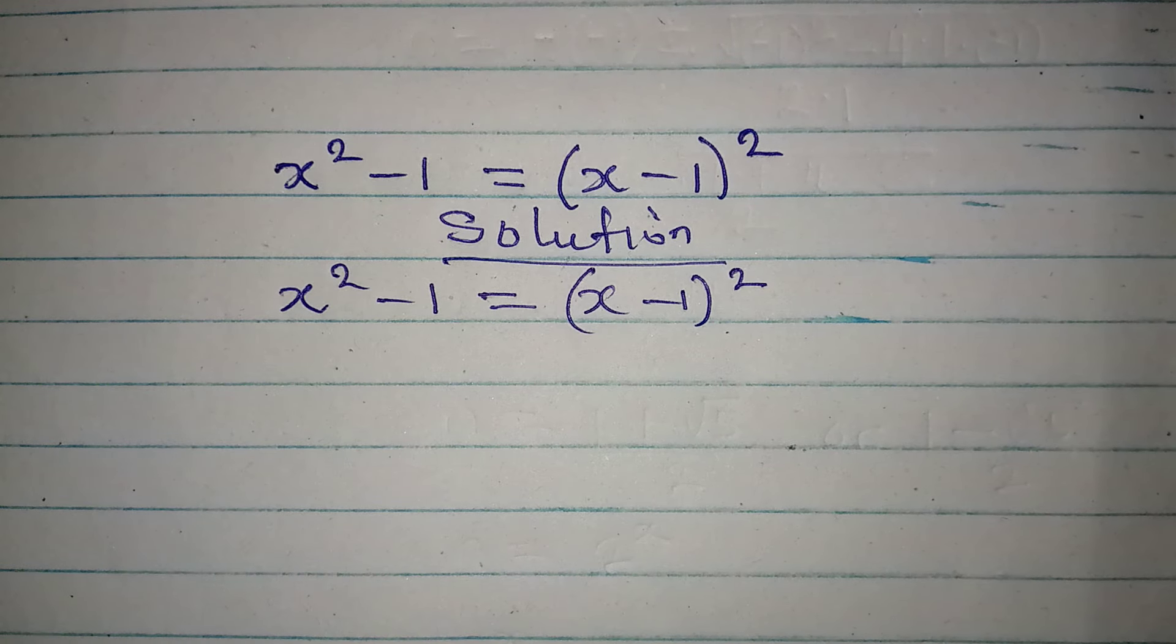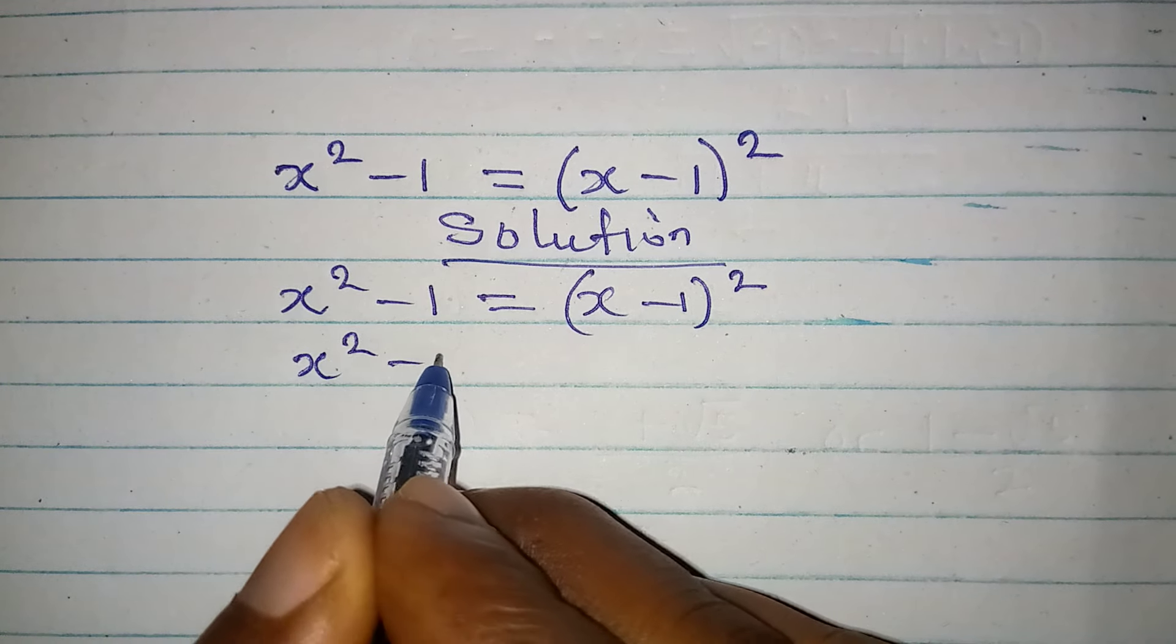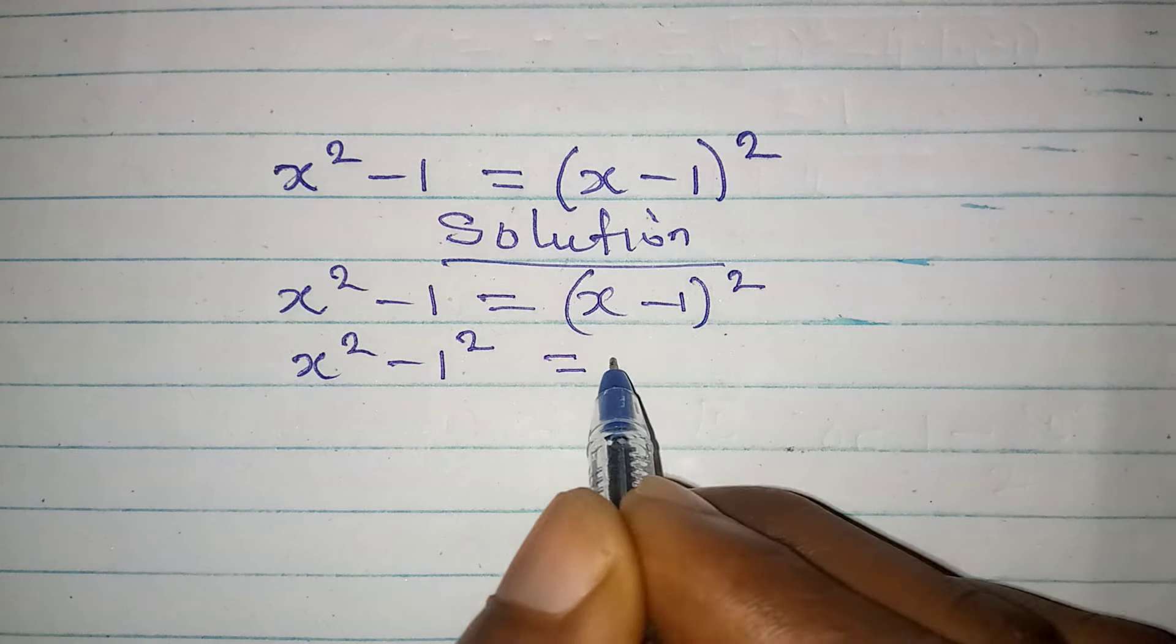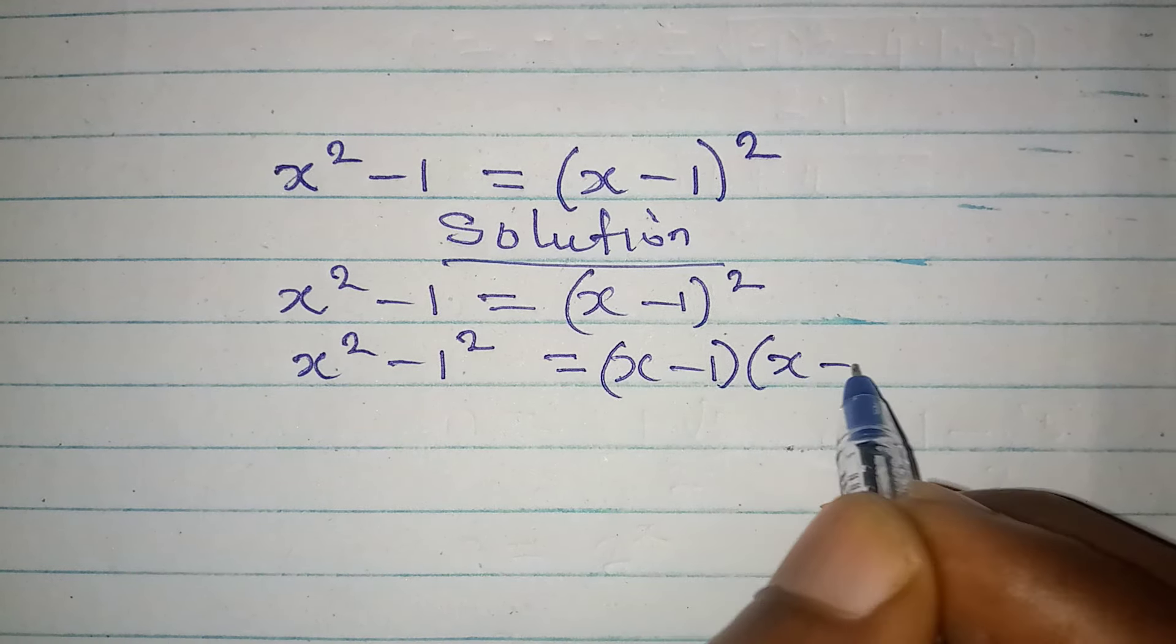Let's continue in this way. This is the same thing as x squared minus 1 squared, which will be equal to x minus 1 in two places, x minus 1.